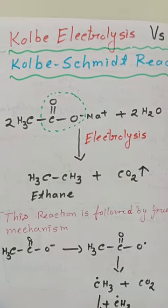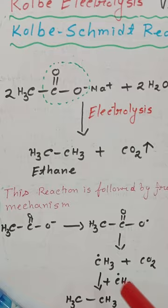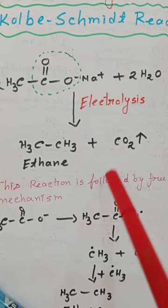Now we are going to discuss Kolbe electrolysis versus Kolbe-Schmidt reaction. Kolbe electrolysis is a decarboxylation process because in this reaction carbon dioxide molecules release from acetic acid.